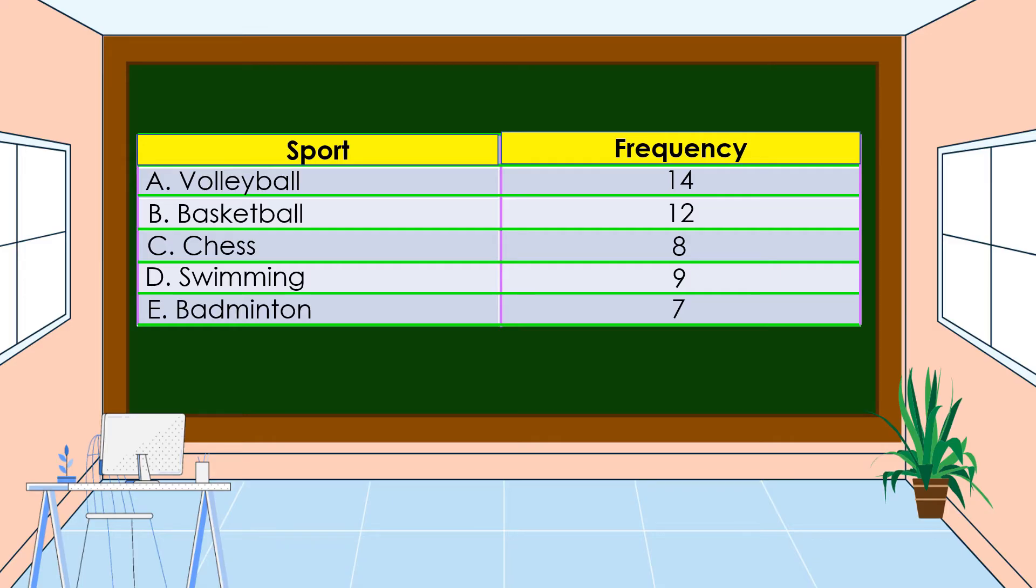Then don't forget to put a title to the table presented. In this example, the title is San Miguel Elementary School Pupils' Favorite Sport. So based on the table, what is the most favorite sport of the pupils in San Miguel Elementary School? Yes, you are right. It is volleyball.